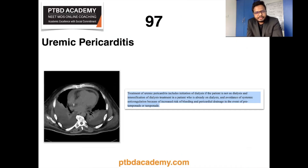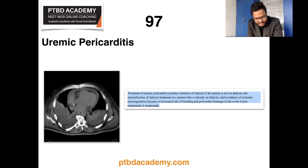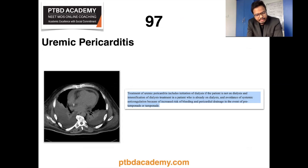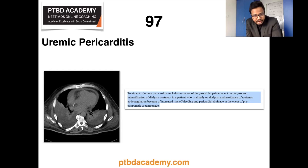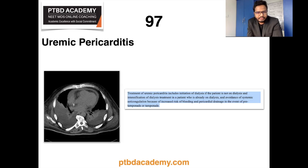Moving on to uremic pericarditis and its line of treatment. Uremic pericarditis is a major complication of kidney disease and may occur in patients with acute or chronic renal failure, before or even during dialysis. A CT scan of the chest showing pericardial effusion with bilateral effusion in a patient with uremic pericarditis is shown. Treatment includes initiation of dialysis if the patient is not on dialysis, intensification of dialysis if already on it, and avoidance of systemic anticoagulation due to increased risk of bleeding and pericardial damage in the event of pre-tamponade or tamponade.